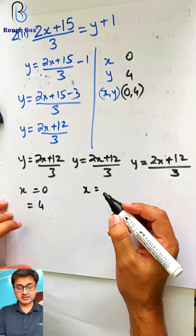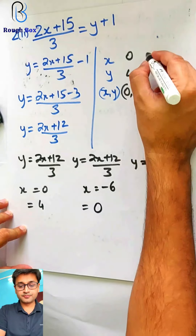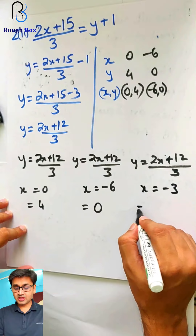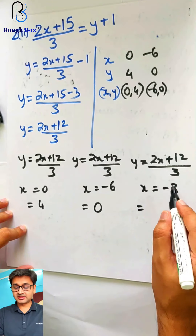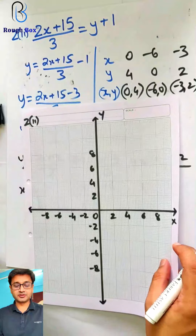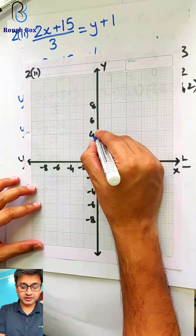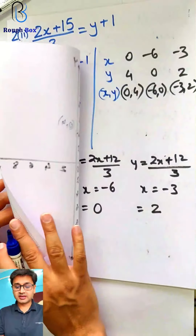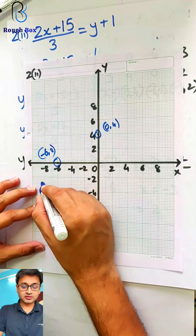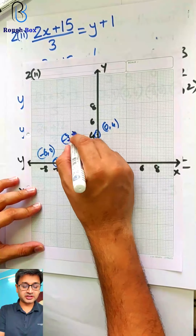Now assuming x as minus 6: 2 into minus 6 is minus 12, and minus 12 plus 12 gives 0. So (minus 6, 0) is the second point. Assuming x as minus 3: minus 3 into 2 is minus 6, so plus 6 by 3 gives 2. So (minus 3, 2) is the third point. Let's see if they are collinear. First point (0, 4) lies on the y-axis; second point (minus 6, 0) is on the x-axis; and (minus 3, 2) — I think the points are collinear.